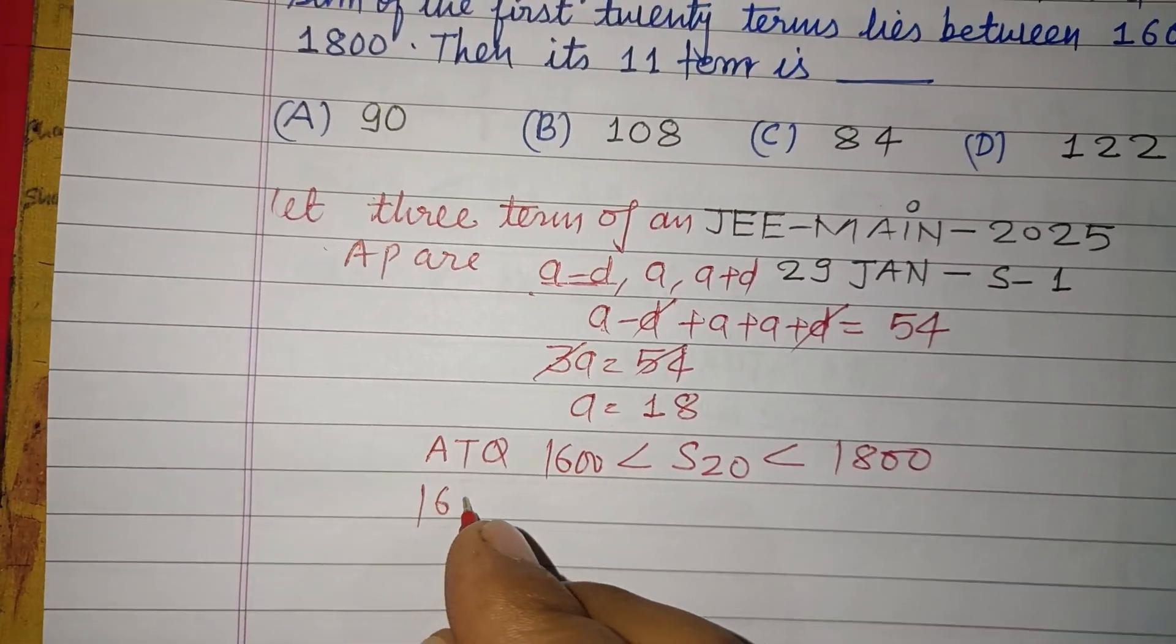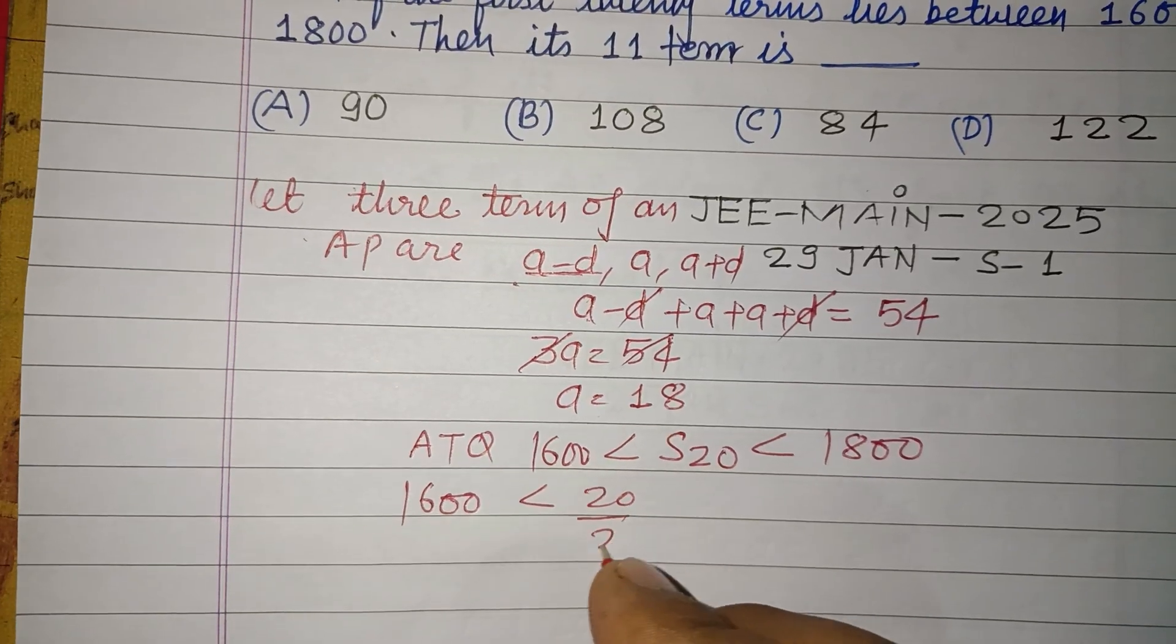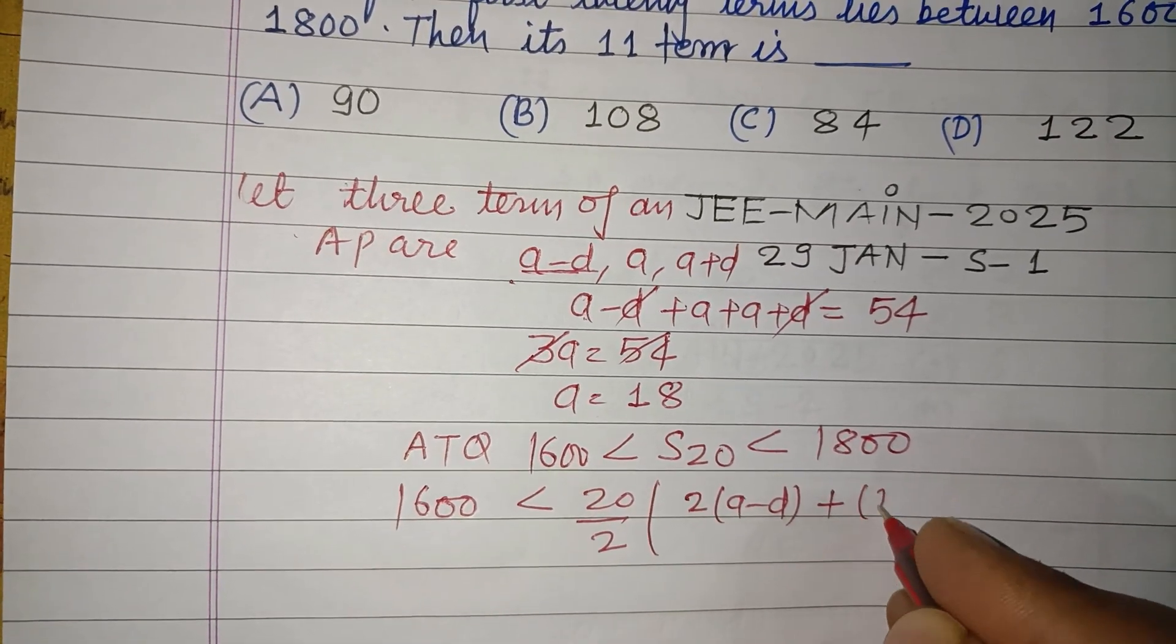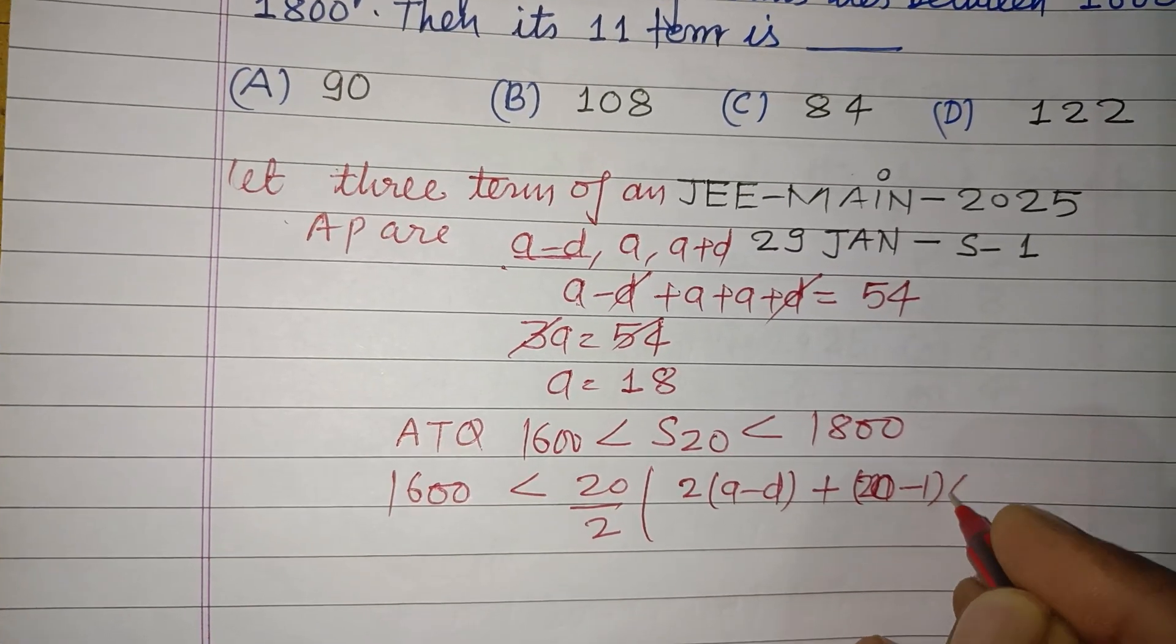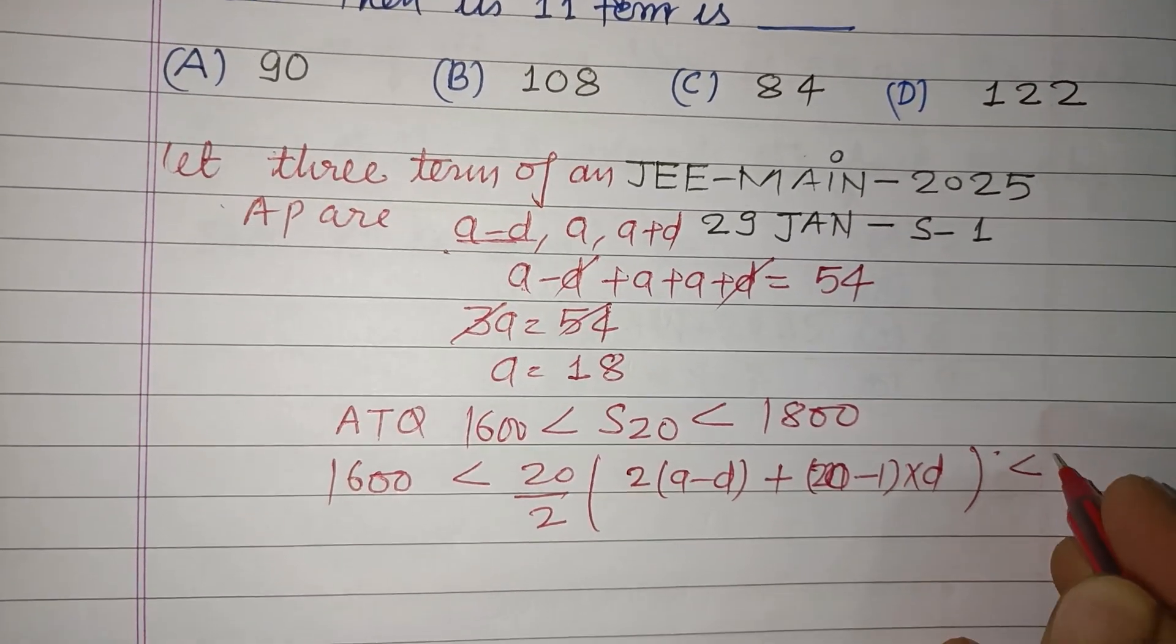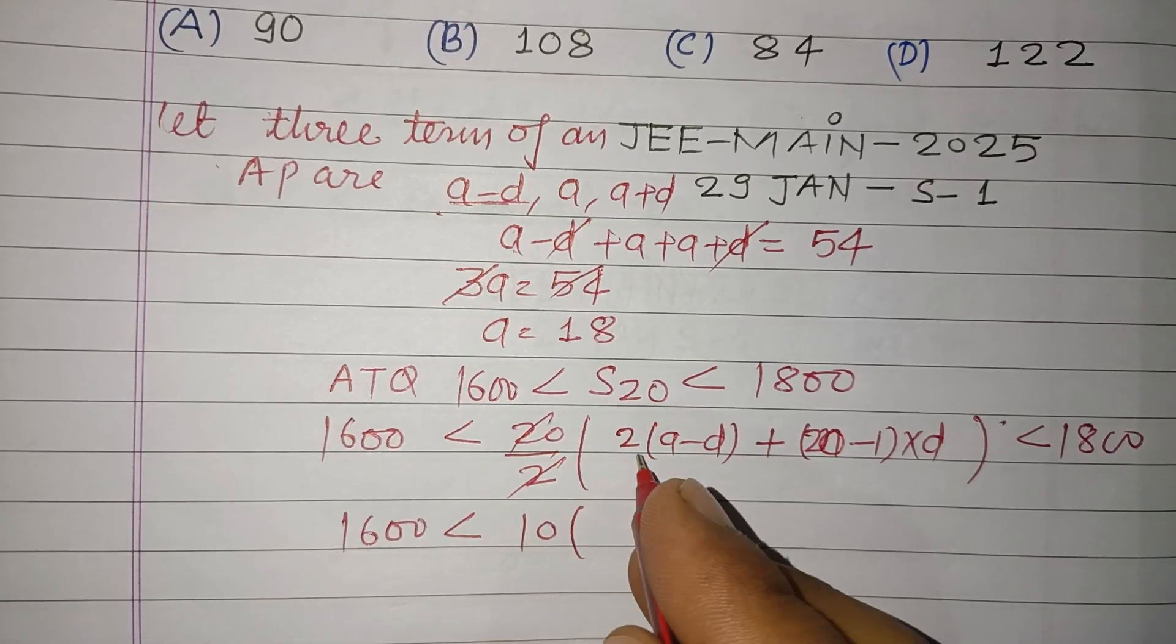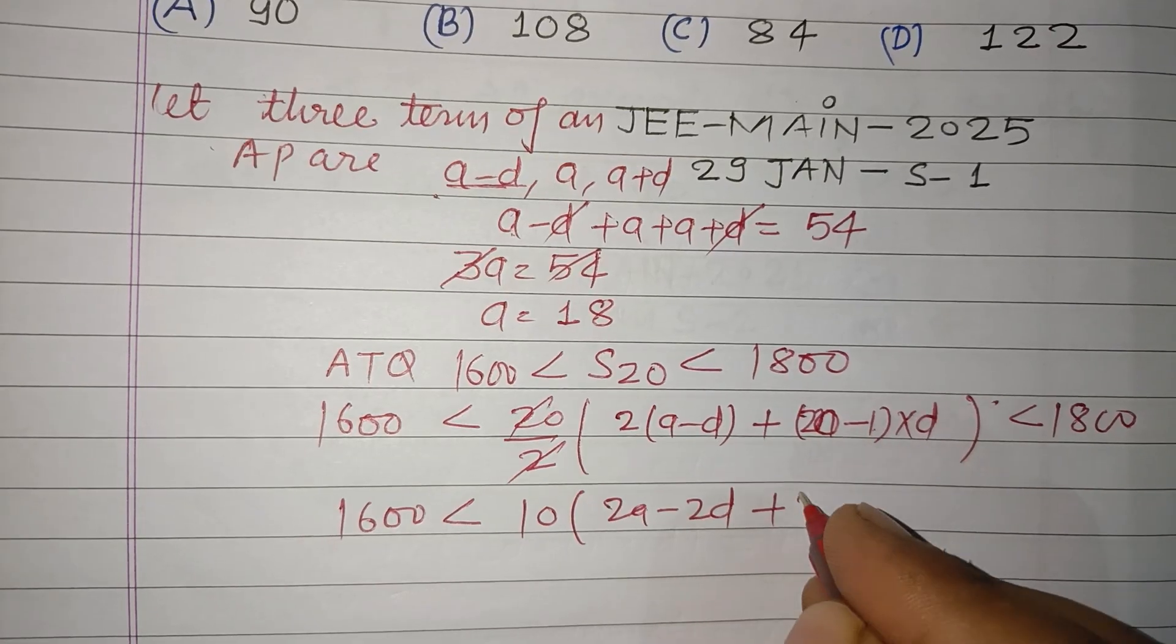So writing this, 1600 less than S20. S20 is 20 by 2, 2A. Here is A minus D plus N minus 1, N is 20, into D, less than 1800. So this is 10. 1600 divided by 10 times this is 2A minus 2D plus 20 minus 1, this is 19D.